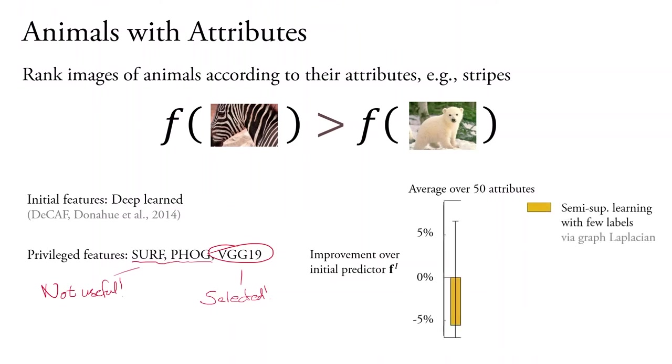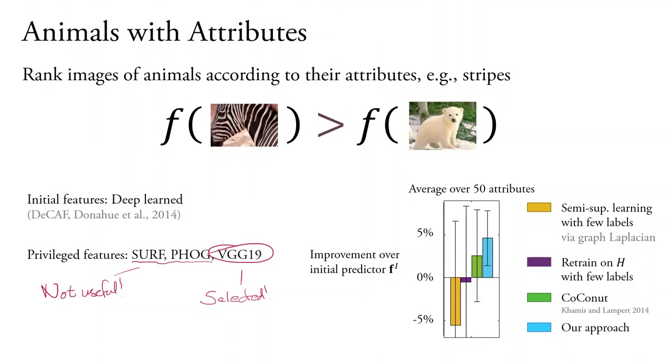Using a few labels with semi-supervised learning has high variability and generally decreases performance. Similarly, if we used a few labels to retrain a new predictor given the privileged information, this can also increase or decrease performance. Kamis and Lampert's coconut on the TUPI problem often improves performance but still has some high variability. And our approach consistently improves performance and, due to its selection of useful features, never decreases performance.